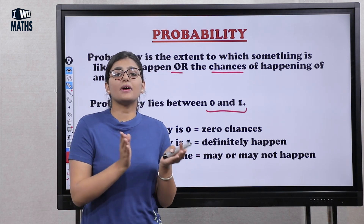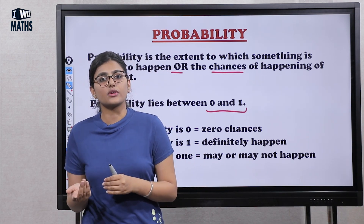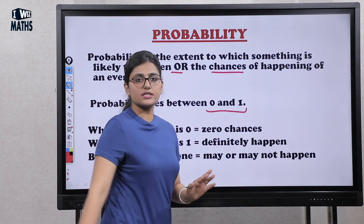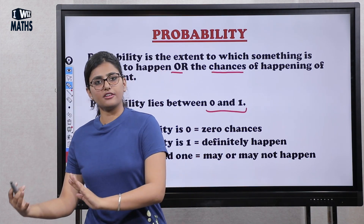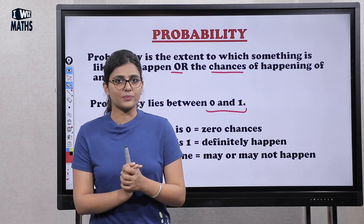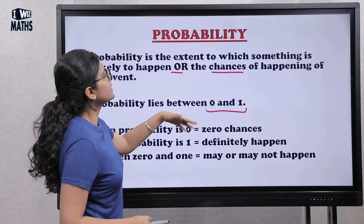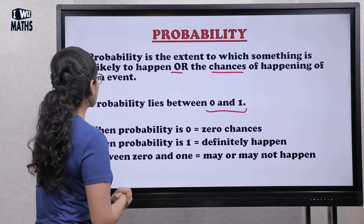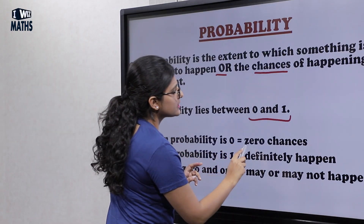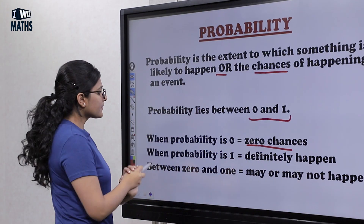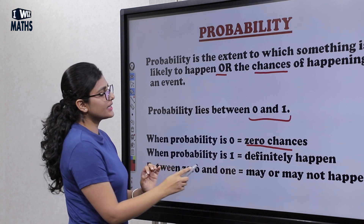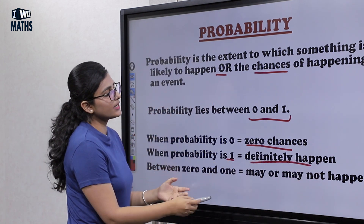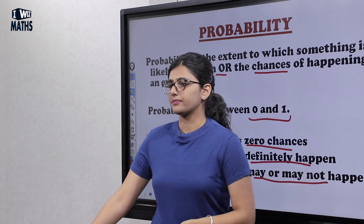You are a bit confused about whether you will pass or not, so the probability of passing is between zero and one — either you will definitely fail or pass. When probability is zero, that means zero chances of the event happening. When the probability is one, it will definitely happen. And between zero and one, it may or may not happen.